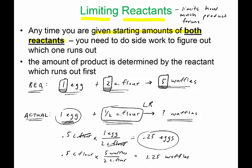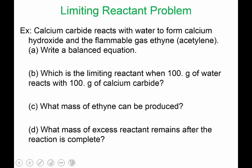So there you have it — if you only had half a cup of flour, you would need that much egg and it would only create 1.25 waffles. Now let's move on to a chemistry problem. We have the following reaction: calcium carbide reacts with water and forms calcium hydroxide and the flammable gas ethyne, or acetylene. Write a balanced equation. Carbide is a polyatomic ion, C₂²⁻, and it combines with calcium to make CaC₂.